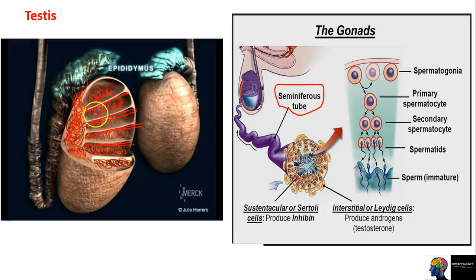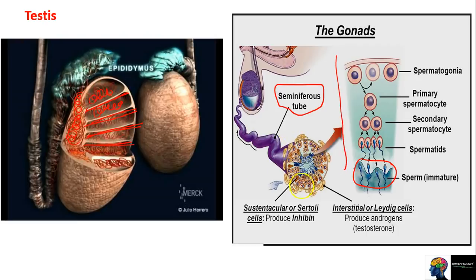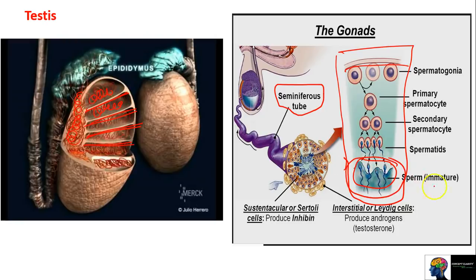These are seminiferous tubules. Inside these tubes, sperm is produced. Starting from here, through slow divisions, a proper sperm is formed. The sperm is immature when produced in the testis, then goes to the epididymis where it matures. One important structure is the seminiferous tubule. A second important thing in the testis is: what are the main functions of the testis?